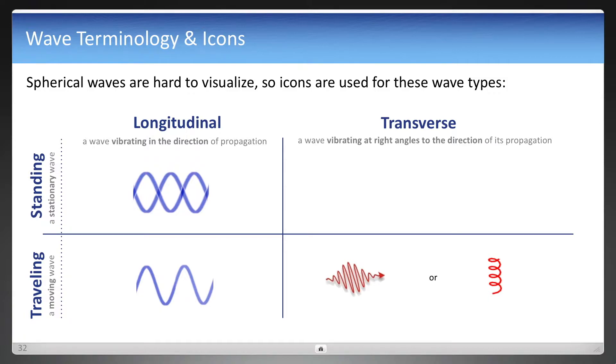Bottom left you see the longitudinal traveling wave. And then in the bottom right quadrant you see two different icons for waves that are traveling but are transverse. And one is going to be as a result of particle vibration and the other for spin. And these will be used in upcoming videos.